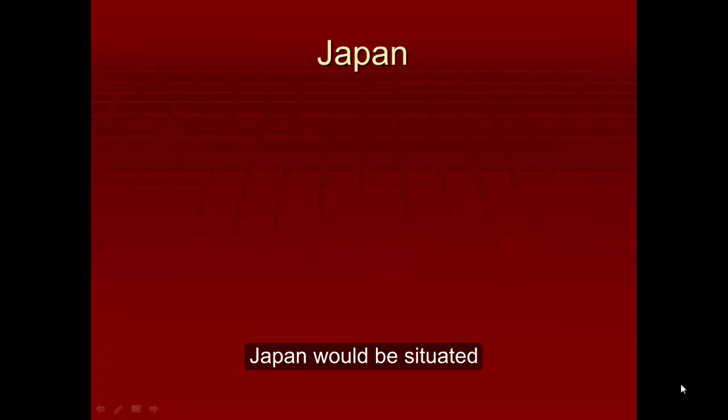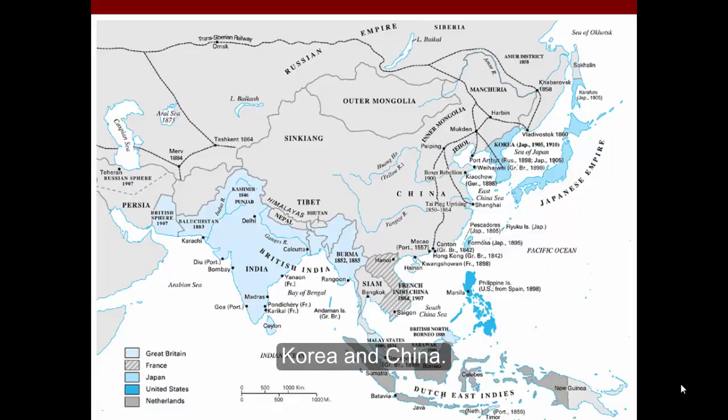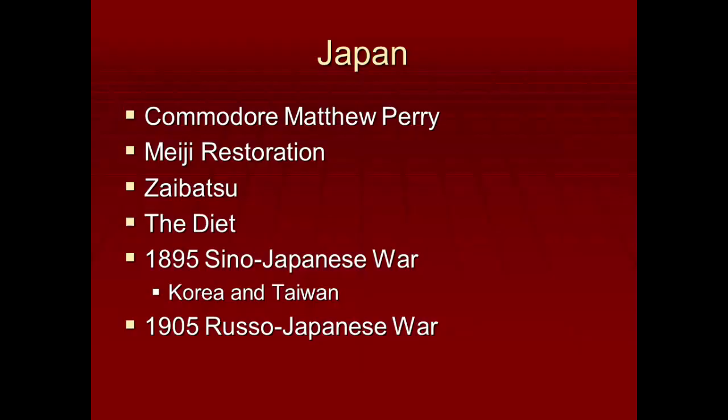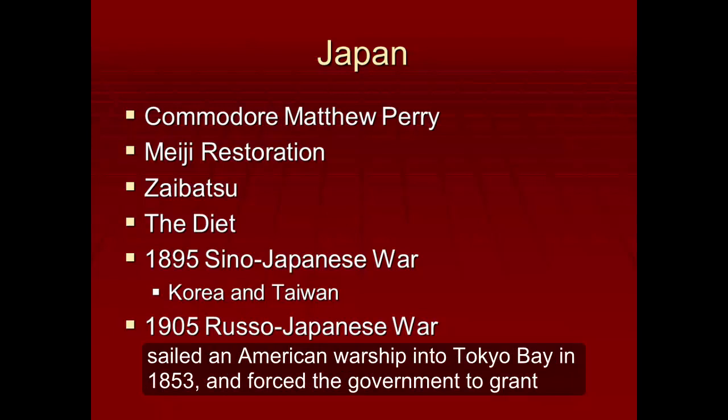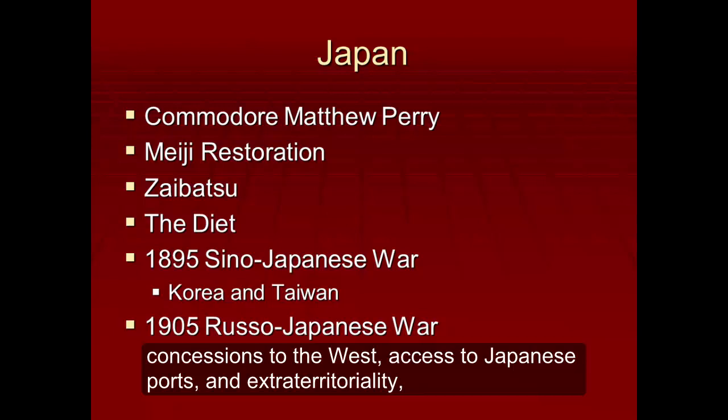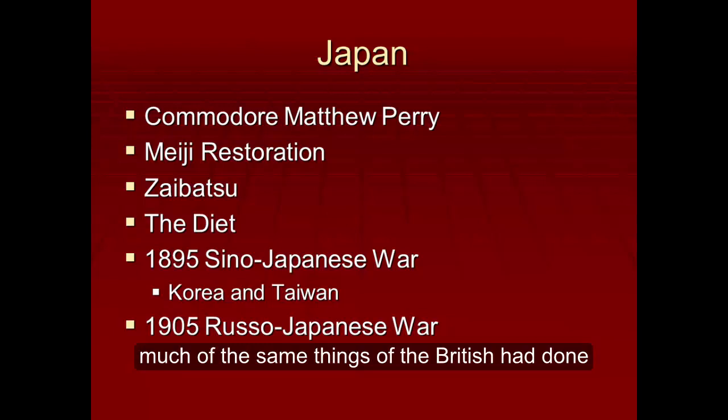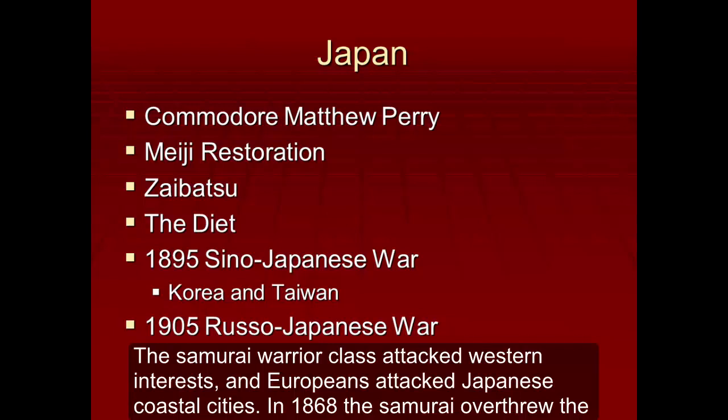Japan would be situated off the coast of Korea and China. Japan had forbidden Western trade until the American Commodore Matthew Perry sailed an American warship into Tokyo Bay in 1853 and forced the government to grant concessions to the West: access to Japanese ports and extraterritoriality — much of the same things that the British had done against China. The samurai warrior class attacked Western interests, and Europeans attacked Japanese coastal cities.